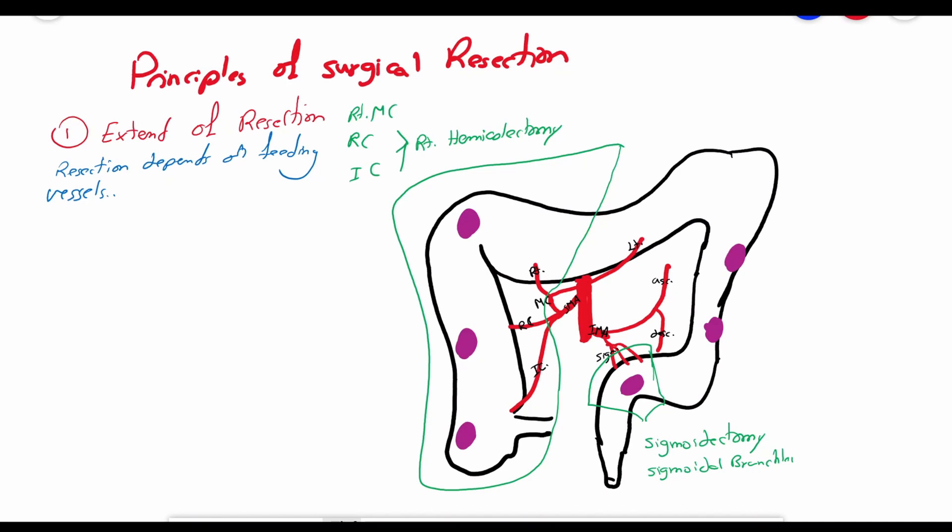Tumors of the descending colon are treated with the removal of the sigmoid colon, descending colon, splenic flexure, and the distal one-third of the transverse colon, along with the central ligation of the inferior mesenteric artery, which is known as the high tie, and the left branch of the middle colic artery.